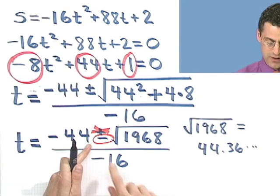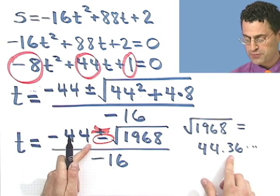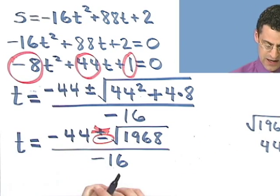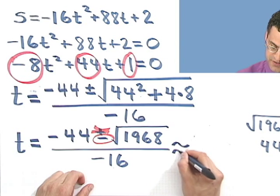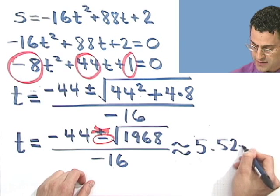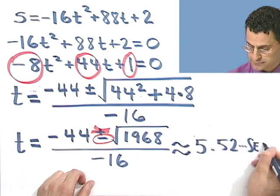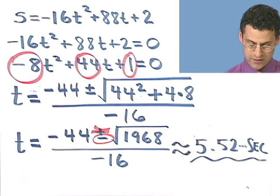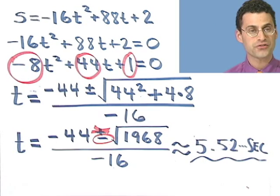And the positive sign must be an extraneous root. So what happens? I have negative 44, and then I subtract off a 44.36 something. And if you do that and divide by 16, you can compute this on a calculator just to get a sense of what this is, you'll see 5.52 something seconds.